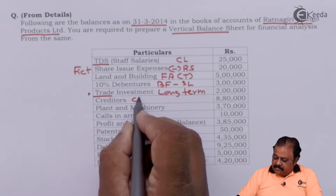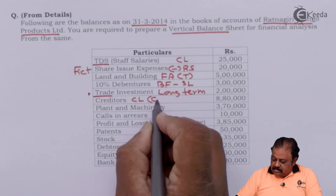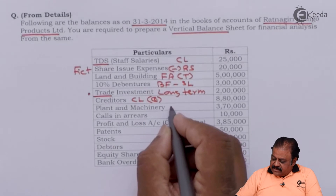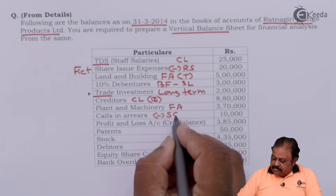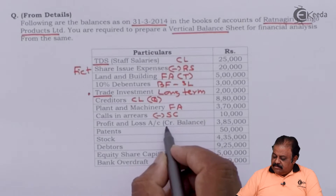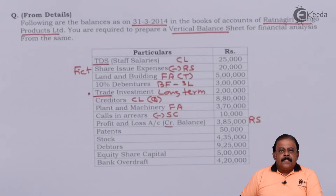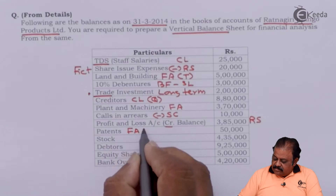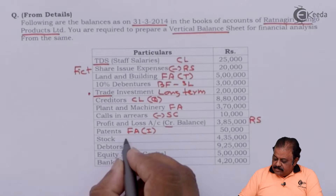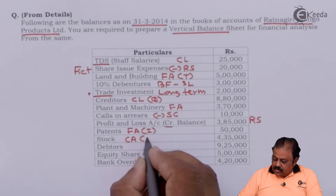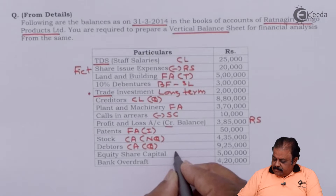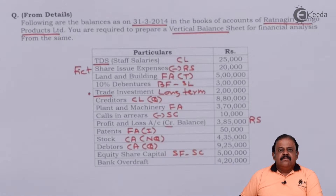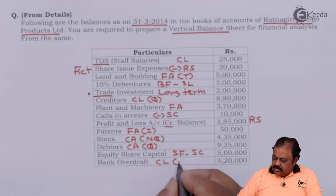Creditors — current liability, quick. Plant and machinery — fixed assets. Calls in arrears will be deducted from share capital. Profit and loss account credit balance — surplus, part of reserves and surplus. Patents — fixed assets, intangible. Stock — current asset, non-quick. Debtors — current asset, quick. Equity share capital — part of shareholders fund. Bank overdraft — current liability, non-quick.